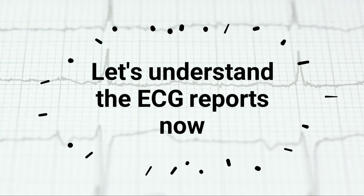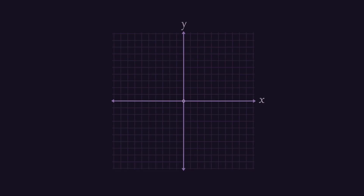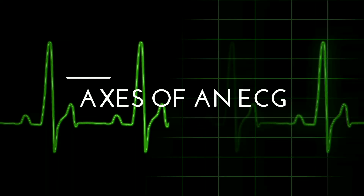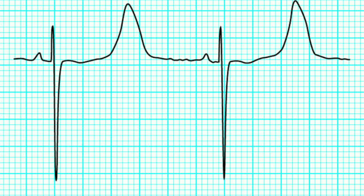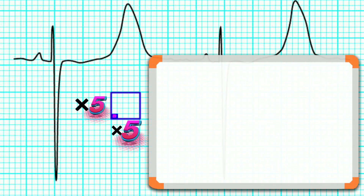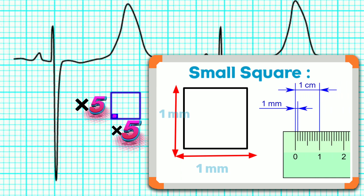It's time to dive into the interpretation of this report. Every graph is a relation between its axes — the horizontal one called the x-axis, and the vertical line called the y-axis. ECG is also a graph, so it's important to know the axis along which an ECG is plotted. The x-axis represents time in meters per second, while the y-axis represents voltage in millivolts. There are two kinds of squares: a large square, and the smaller one inside it. Every large square has five small squares, both horizontally and vertically.